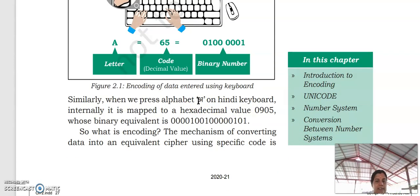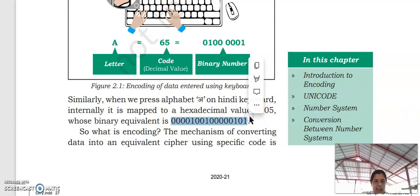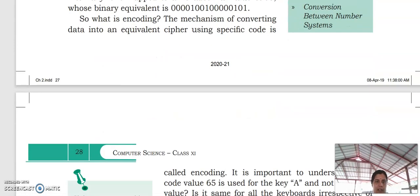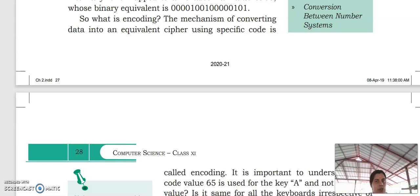Similarly, when we are using a Hindi keyboard and Hindi A is pressed, instead of decimal, it is mapped to hexadecimal value. We will study what decimal, binary, and hexadecimal are later. So it is converted to 09005, which is its equivalent form. This is known as encoding. The mechanism of converting data into an equivalent cipher using a specific code is called encoding. Simply, we are converting data into its equivalent specific code or equivalent binary representation, which is known as encoding.